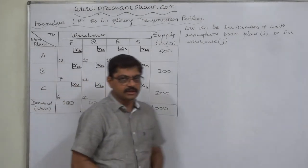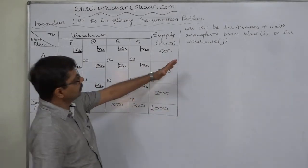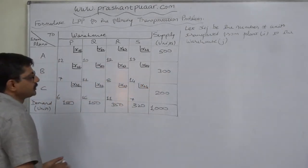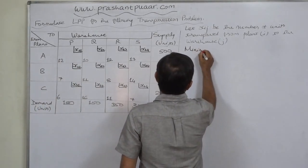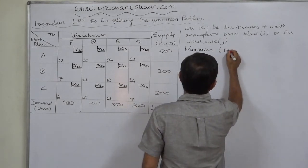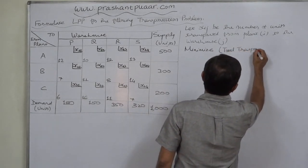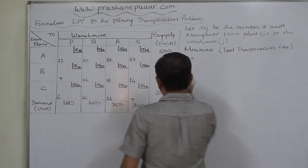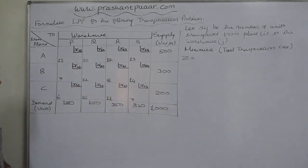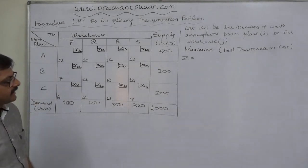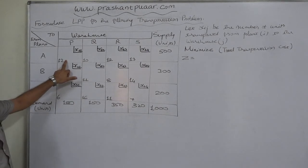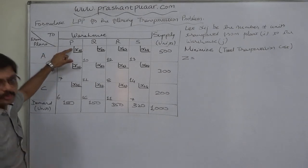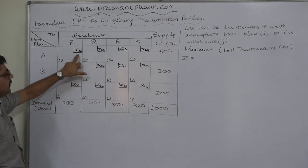We know that a transportation problem always has the objective of minimizing the transportation cost. So the xij units are to be transported at minimum possible cost. Our objective is to minimize Z, the total transportation cost. We know that the transportation cost per unit from a supply point to a destination, multiplied by the quantity transported, gives the total cost for that route.